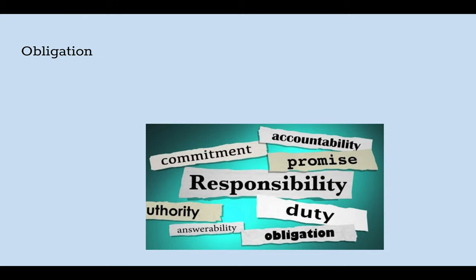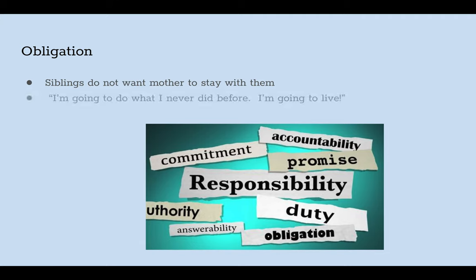The third theme is obligation. The siblings do not want their mother to stay with them; they only make the suggestions because they feel obliged to, as society demands that women must be taken care of due to their fragility. The mother has completed her duty as a faithful wife and mother, which is why she says, 'I'm going to do what I never did before — I'm going to live.' This suggests that while she was chained to her marriage, she was not really living. One of the author's messages is that without liberty and independence, one is not truly alive.